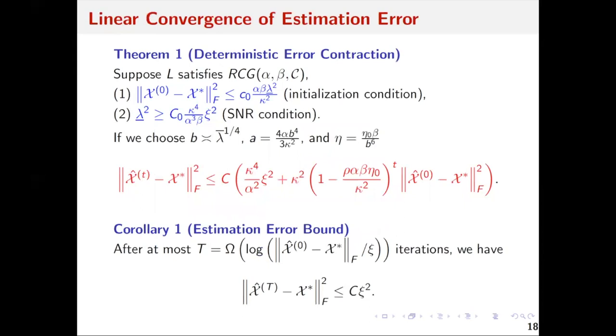Here is the theoretical result. Suppose our loss function L satisfies some regularity condition called the RCG condition, and the initialization condition and SNR condition are satisfied. By choosing appropriate tuning parameters a and b and step size eta, we have the following deterministic error contraction rate. Furthermore, after at most a logarithmic number of iterations, the estimator satisfies this upper bound, fully characterized by the CC square.